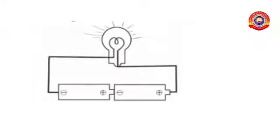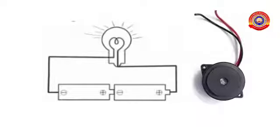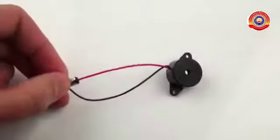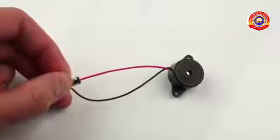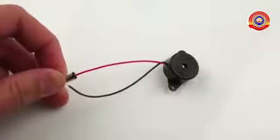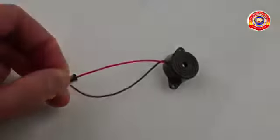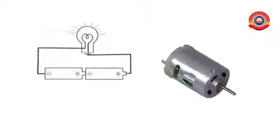What happens when you replace the bulb on this circuit with a buzzer? Yes, instead of glowing, a beeped sound is produced. Like this, try to replace the buzzer with a mini motor. Does it work? Definitely it works, like this.